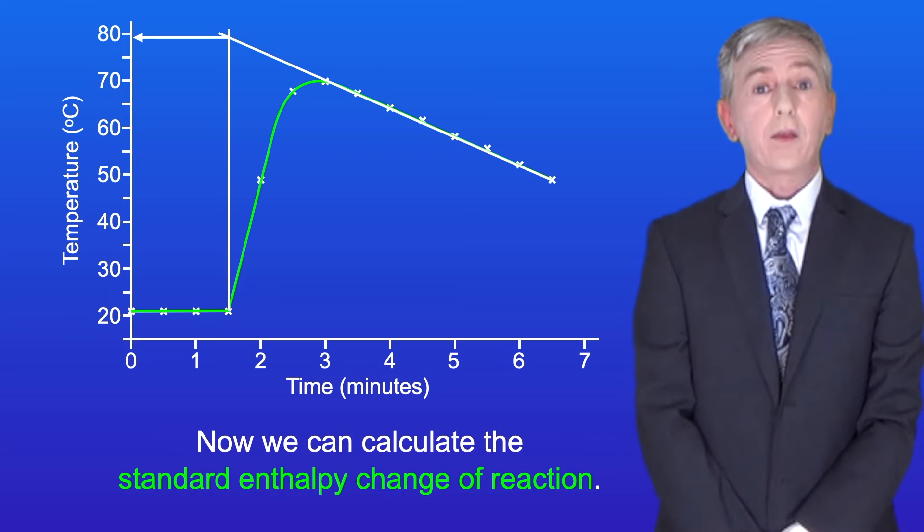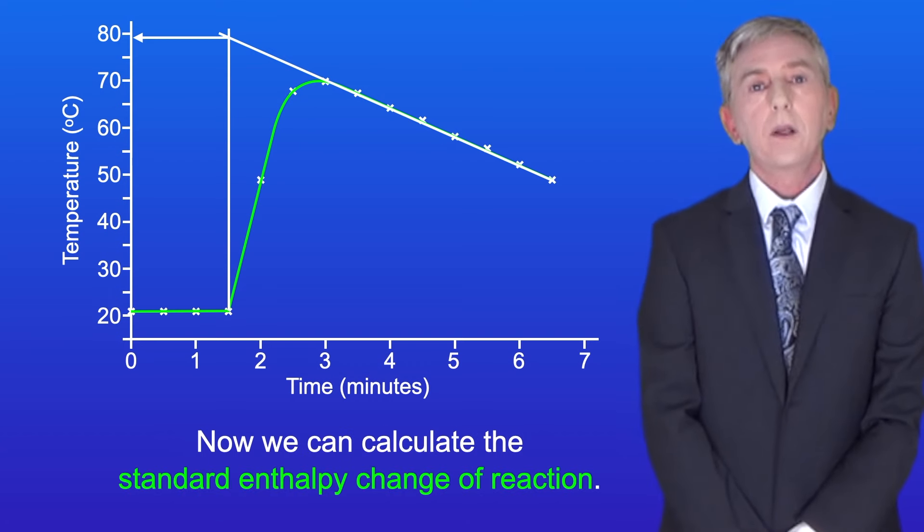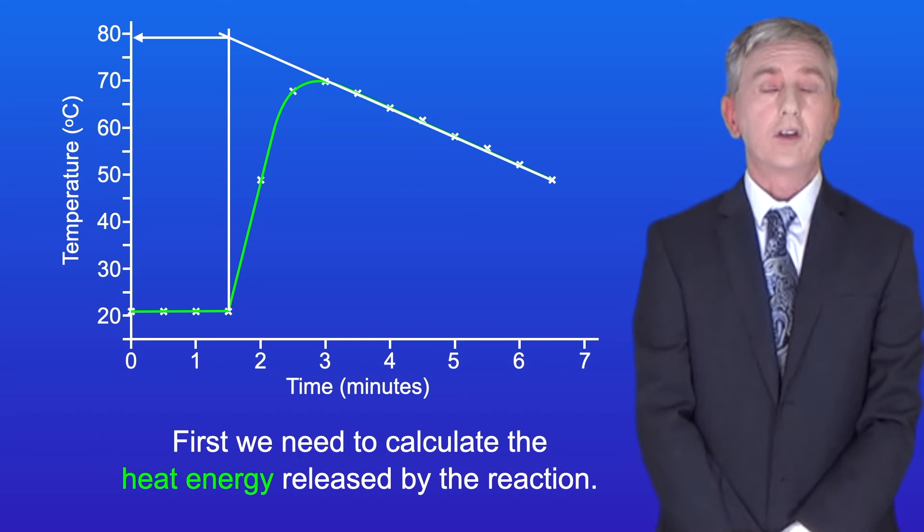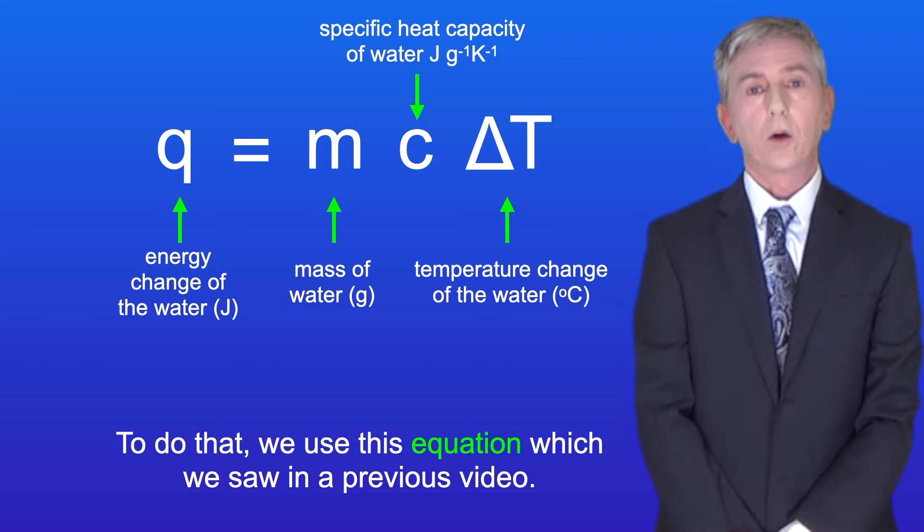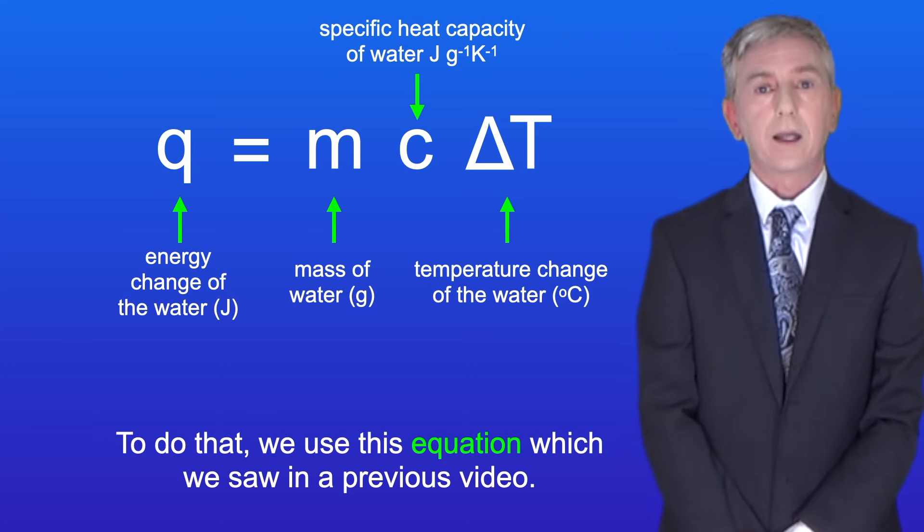Now we can calculate the enthalpy change of reaction. First, we need to calculate the heat energy released by the reaction. To do that, we use this equation, which we saw in a previous video: Q equals MC delta T.